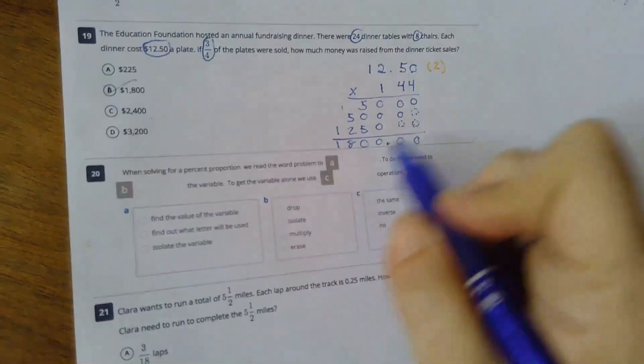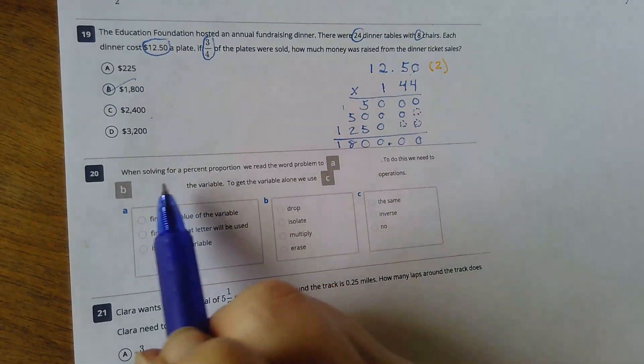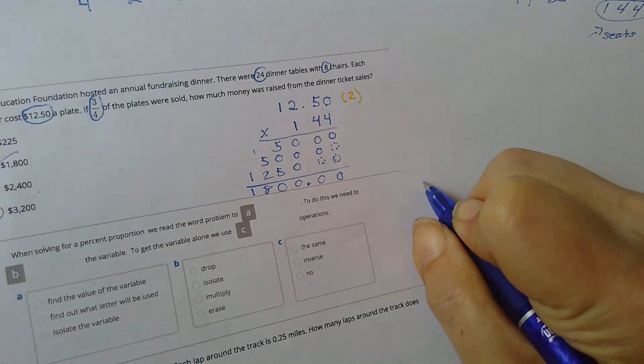Okay, so this was a multiple-choice drop-down menu. When solving for a percent proportion, and to get credit, you're going to rewrite it.